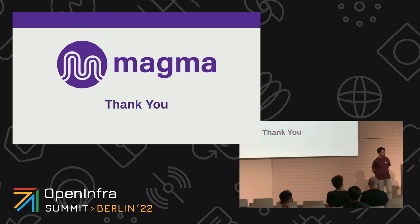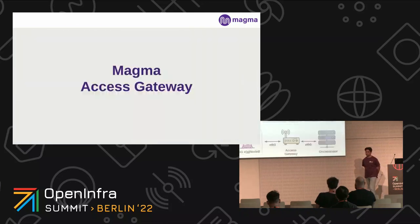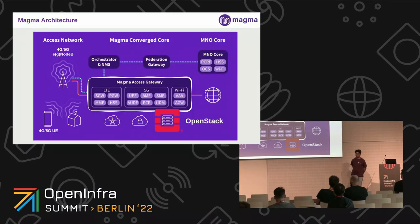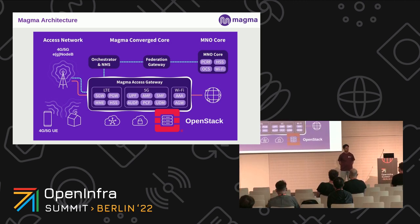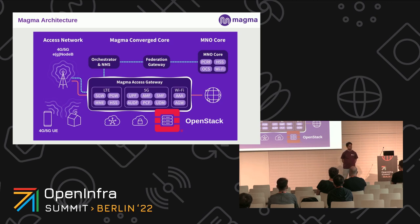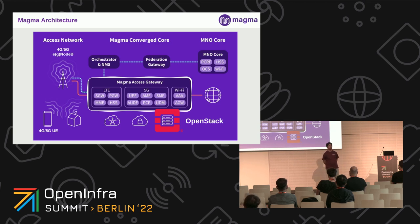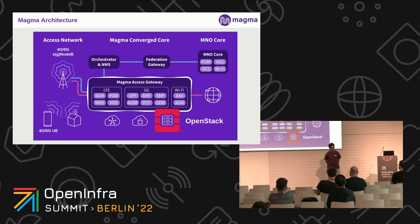Regarding the Wi-Fi part — as you saw in the first slide, there is a Wi-Fi block that's part of the Magma Access Gateway. If you wanted something like CWAC and use the Wi-Fi access gateway, you can use it. However, recently the Wi-Fi access gateway is not actively maintained at this stage. In the past we were actively working on Wi-Fi, but there were not many production deployments so we stopped maintaining it. The code we have is stable, but we are not doing much maintenance on it.